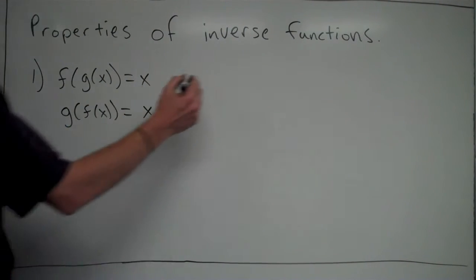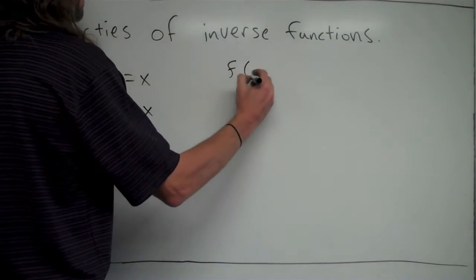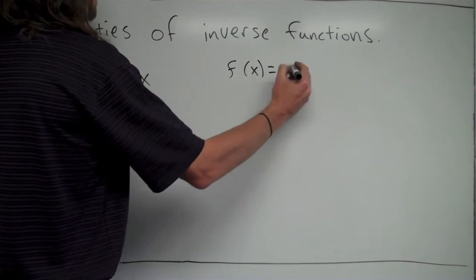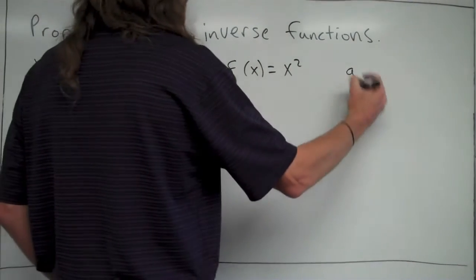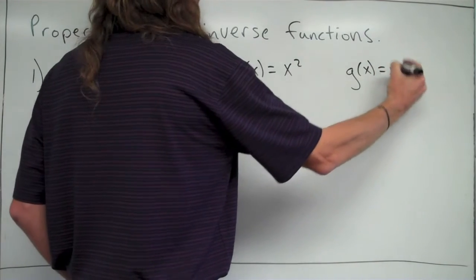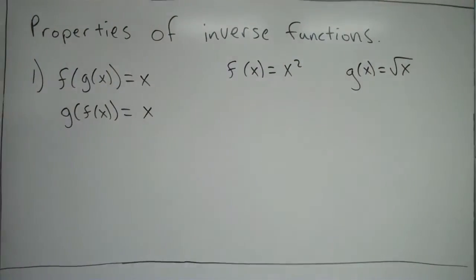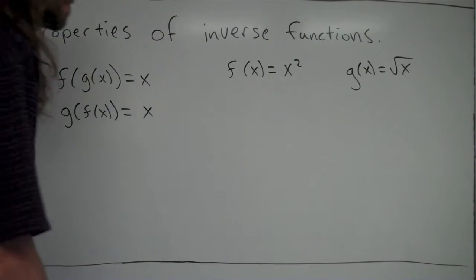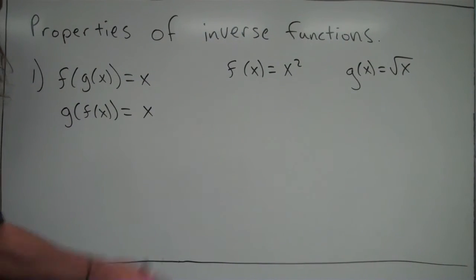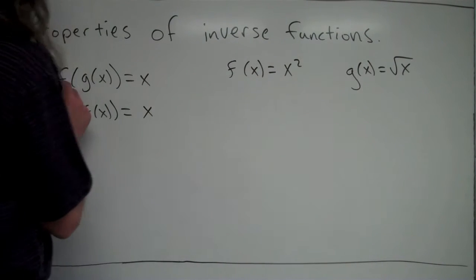So let's just, for example, say f of x is x squared and g of x is square root of x, two functions that are inverses of one another on the interval from zero to infinity. If they're inverse functions, they should meet this criteria right here. So let's just check and make sure.